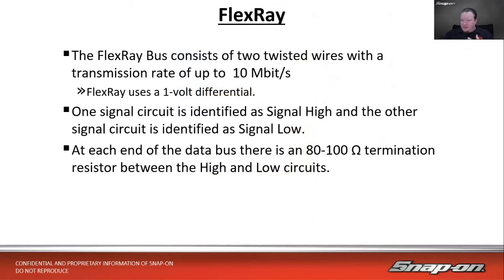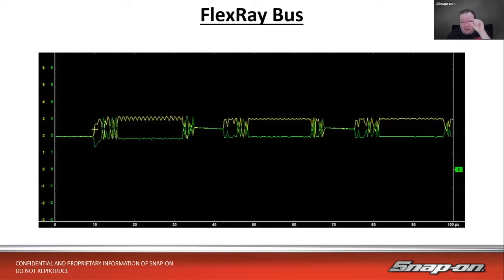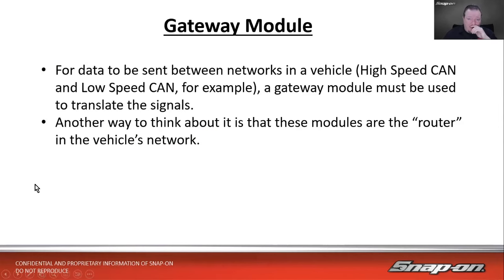FlexRay has been around for quite some time and is mainly used in European cars. The FlexRay bus consists of two twisted wires with a transmission rate of 10 megabits per second — by far the fastest network we've discussed. Because of that speed, it only has a 1-volt differential. It has a signal high and signal low, with an 80–100 ohm termination resistor at each end. On scope, the pattern looks very compressed — small ups and downs because of the high speed.